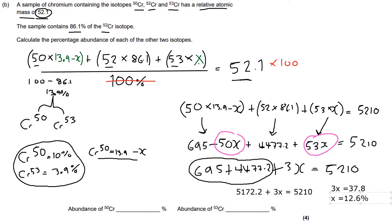So 12.6%. And that tells me that chromium-53 was 12.6%. Subtract that from 13.9 and we will find that chromium-50 is 1.3%. There you go. And that's how to solve a really difficult relative atomic mass equation.